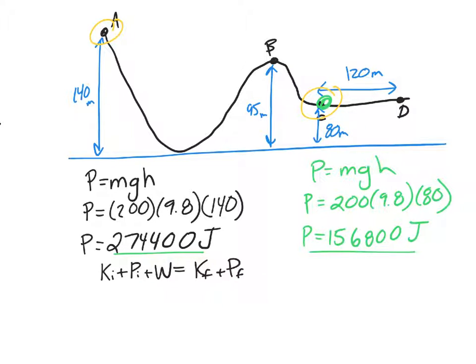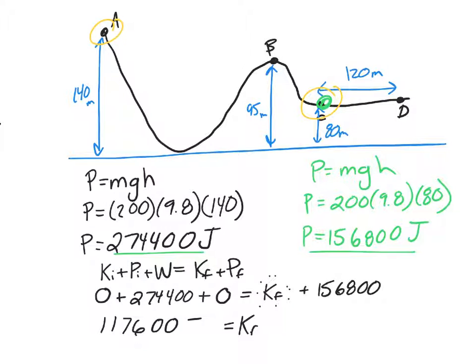Ki plus Pi plus work equals Kf plus Pf. So our kinetic energy initially, well, the roller coaster was at rest, plus our initial potential energy 274,400 plus work. Hmm, would there be work? Well, there's no jet pack on the roller coaster, there's no engines, and they specifically said there's no friction and there's no air resistance. So in this situation, you could say work is zero. Equals our K final, which is what we're looking for, that's our whole goal here, plus our potential final 156,800 joules. So we're going to do some math here and we're going to solve. And you should get a kinetic energy of 117,600 joules.